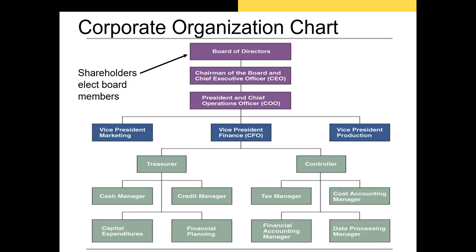The CFO is overseen by either the COO, chief operating officer, or the CEO, chief executive officer. The CEO of a publicly traded firm is overseen by the board of directors, who are elected by the shareholders of the firm. Usually there's an annual shareholders meeting, and most of those meetings will take place in May or June of any given year.